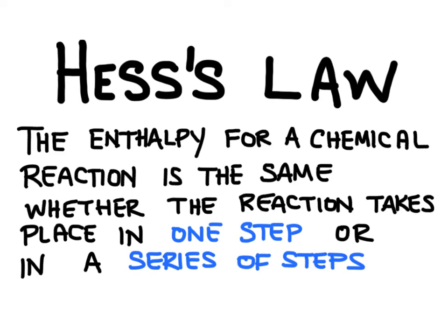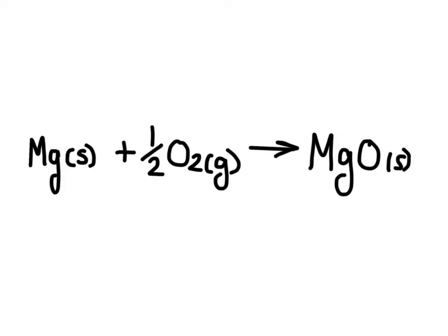Hess's law states that the enthalpy change for a chemical reaction is the same whether the reaction takes place in one step or in a series of steps. Here's the reaction between magnesium metal and oxygen gas — it's a highly energetic chemical reaction, and it's really difficult to measure the heat released during that reaction.